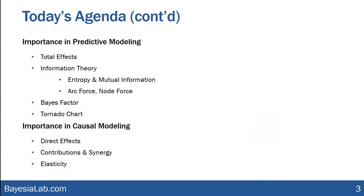As we continue, we want to proceed into predictive modeling and talk specifically about the types of measures we can use for importance, such as total effects. We'll take a little excursion into information theory — we'll need to talk about entropy and mutual information, which provide the basis for measures like arc force and node force. Then we'll discuss the Bayes factor as a very important measure of importance, and briefly introduce a tornado chart that Bayesian Lab offers to visualize the importance of variables.